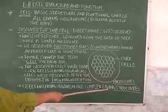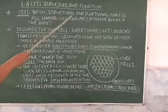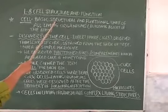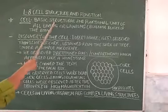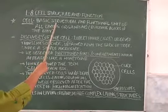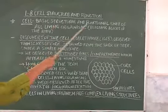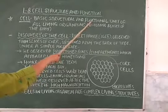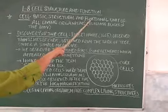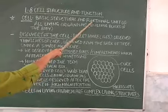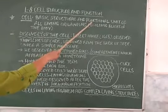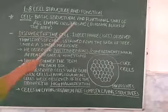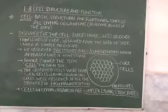So the cell is called the structural and functional unit of life, because all life forms are made up of cells. Each cell functions in an individual way and has different small functional units inside. Therefore, the cell is called the basic structural and functional unit of life.